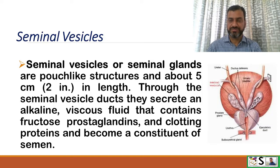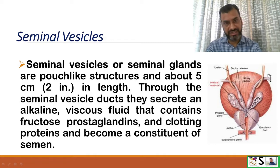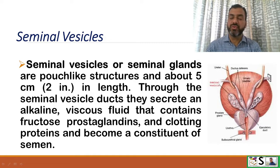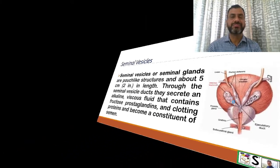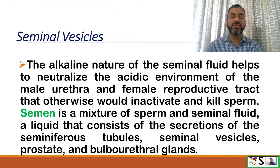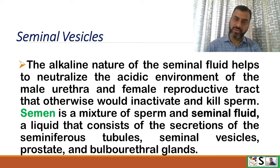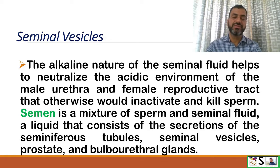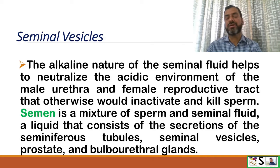The seminal vesicles, or seminal glands, are pouch-like structures about 5 cm in length. Through the seminal vesicle ducts they secrete an alkaline viscous fluid containing fructose, prostaglandins, and clotting proteins, which become a constituent of semen. The alkaline nature of the seminal fluid helps neutralize the acidic environment of the male urethra and female reproductive tract, which would otherwise inactivate or kill the sperm. Semen is a mixture of sperm and seminal fluids consisting of secretions from the seminiferous tubules, seminal vesicles, prostate, and bulbourethral glands.